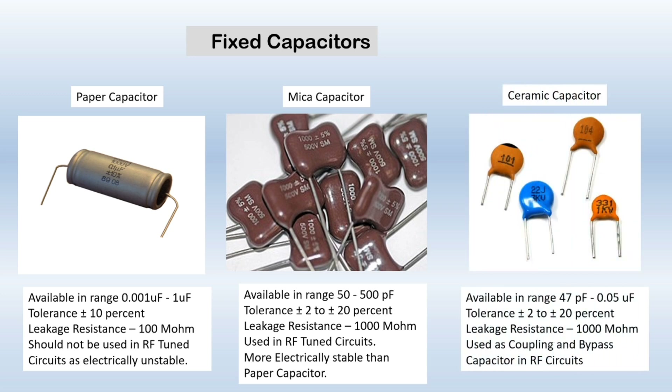Next we have ceramic capacitor. It is available in the range of 47 pF to 0.05 microfarad and has a tolerance of plus or minus 2% to plus or minus 20%. Its leakage resistance is 1000 megaohms and it is used as a coupling and bypass capacitor in radio frequency circuits. All three of these capacitors have their value printed on them.